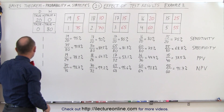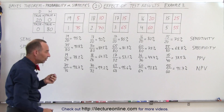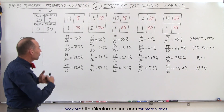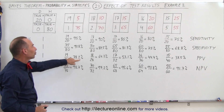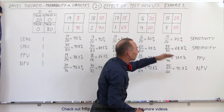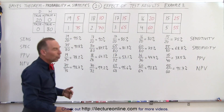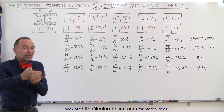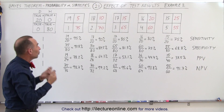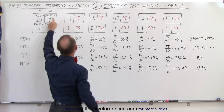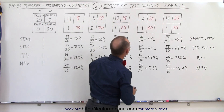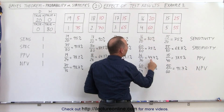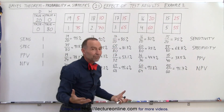The next one is the positive predictive value — the probability that you are indeed positive if you test positive. You can see here that it starts at 78.2% and then drops to 64, 53, 44, 37 — it drops pretty quickly. That means if you test positive, you're not necessarily positive, and the reason is the number of false positives is increasing quite quickly.